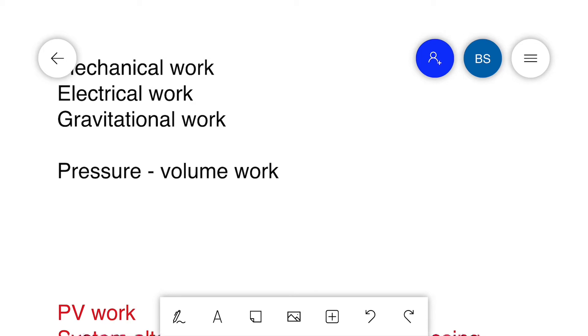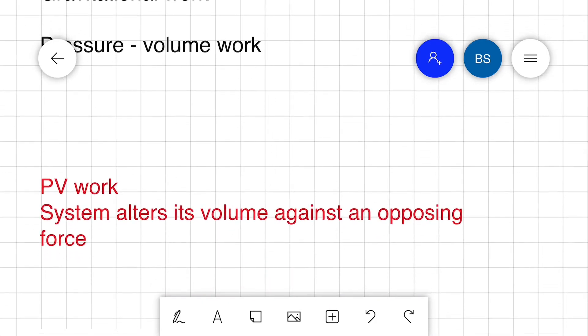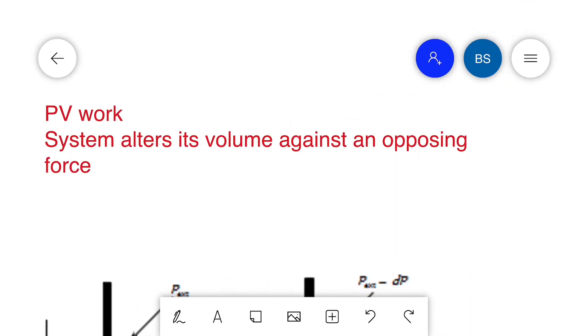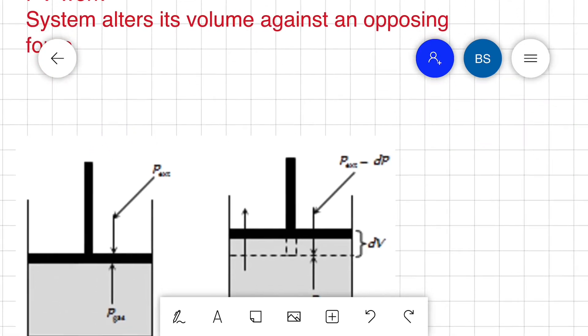The work of a piston is an example of mechanical work. The flow of current in a circuit is an example of electrical work. If we lift a body against the gravitational field, it is gravitational work. In thermodynamics, the most important is pressure-volume work. That is, if the system alters its volume against an opposing force, then the system is said to have done work.